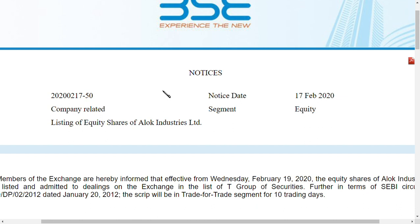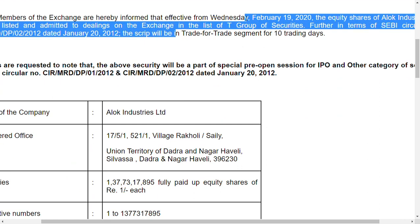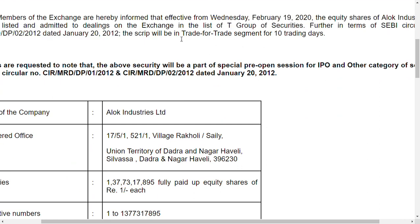That's why everyone sees the same lower circuit. If you look at this lower circuit, you can see it is for 10 days. The trade-to-trade segment for 10 days — that is the problem if you look at the table.